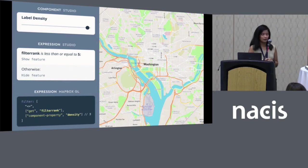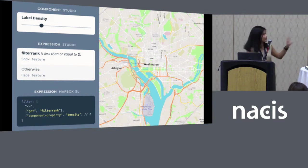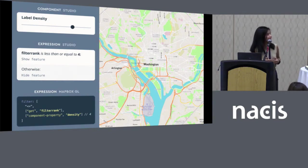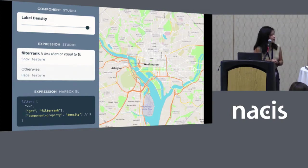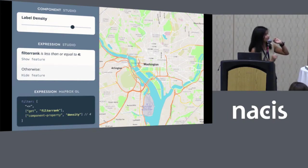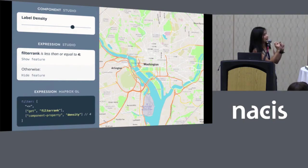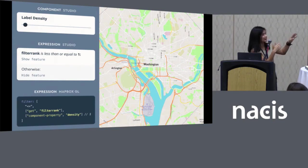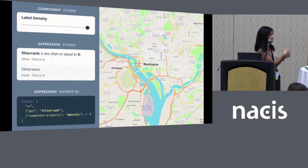Components are pre-configured with some expressions that are used in common map design patterns. With each component, you'll have control over the options that matter without having to write expressions from scratch. In this example, we're looking at a hypothetical place label component that is controlling labels of things like neighborhoods, and we have this single slider for label density.